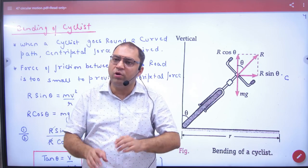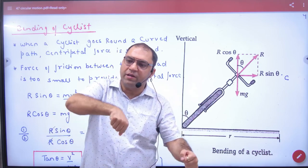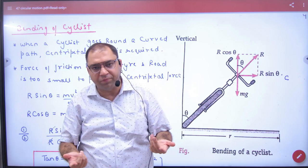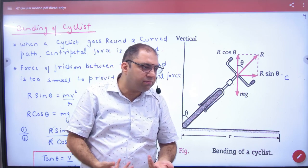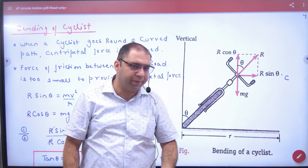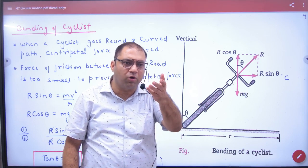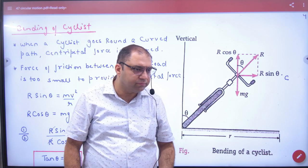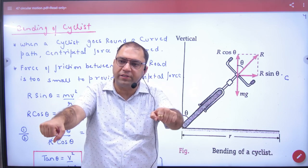The friction is not sufficient because the normal reaction is less due to the cyclist's lower weight. So what does the cyclist do? They bend.